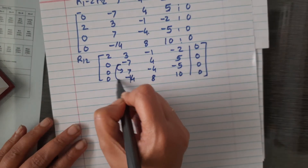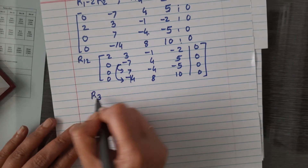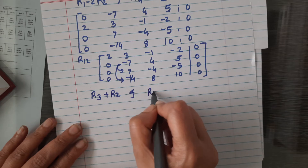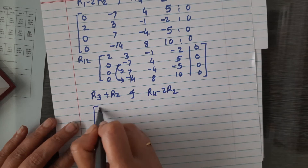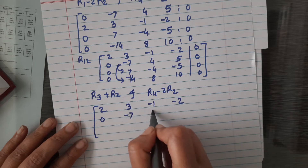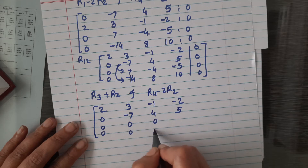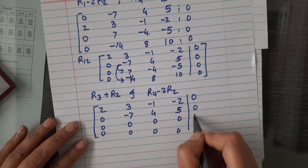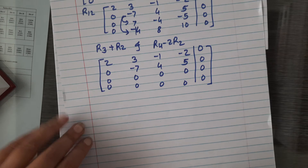Using the -7 pivot in R2, we bring zeros below it by performing R3 plus R2 and R4 minus 2R2. After these operations, the first two rows remain [2, 3, -1, -2] and [0, -7, 4, 5]. The third and fourth row elements become zero, giving the final echelon form with no further row operations needed.